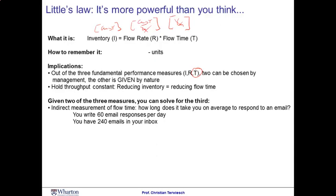How long will it take you on average to respond to your email? This is really not a number that most of us routinely track. However, you can compute this quite easily. If you have 240 emails in your inbox, that is an inventory. That number equals the flow rate — say you're writing 60 emails per day — times the flow time that you don't know. This tells us that your average flow time is four days. Some emails you might respond to faster, some might take longer, but on average it takes four days to respond to an email.